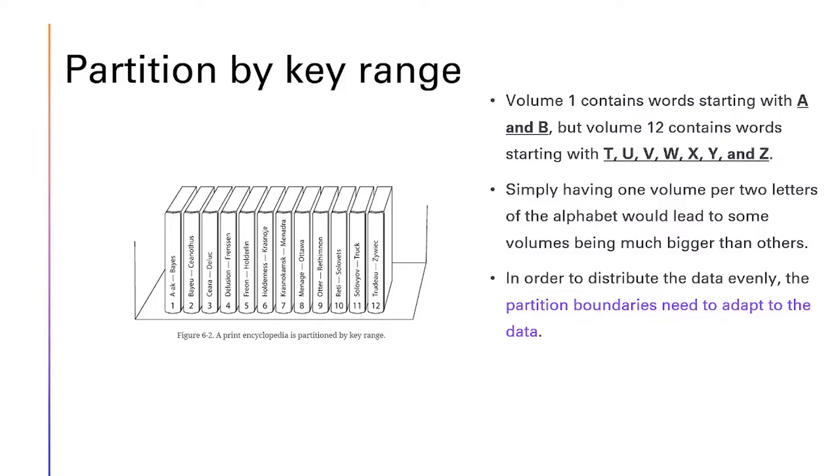Simply having one volume per two letters of the alphabet would lead to some volumes being much bigger than others. In order to distribute the data evenly, the partition boundaries need to adapt to the data.